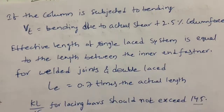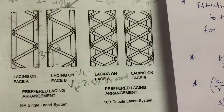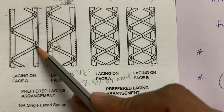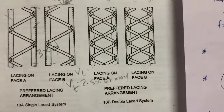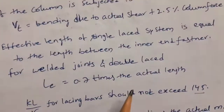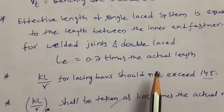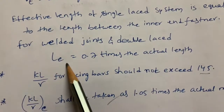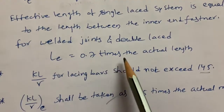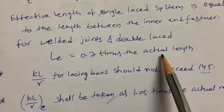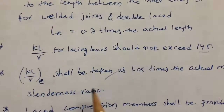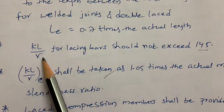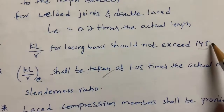The effective length of a single lacing system equals the length between inner fasteners — that is, between the bolting or riveting connections. For welded joints and double laced systems, the effective length is 0.7 times the actual length.